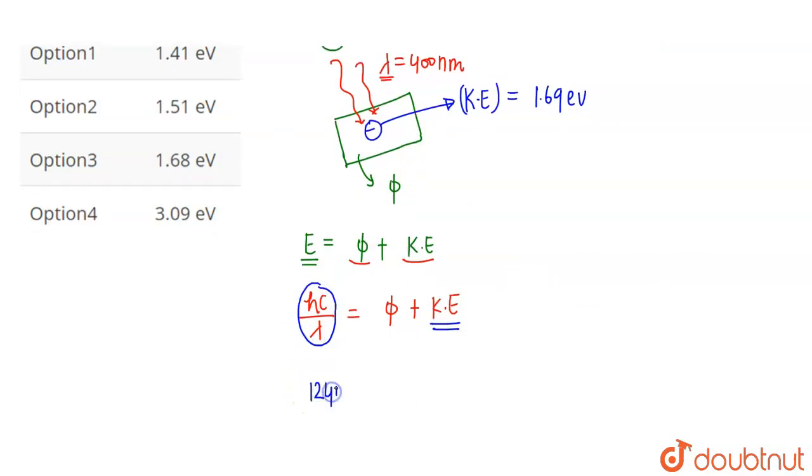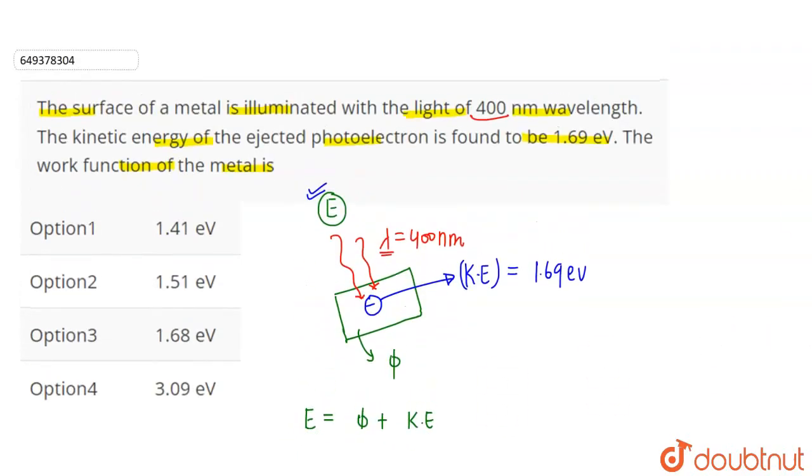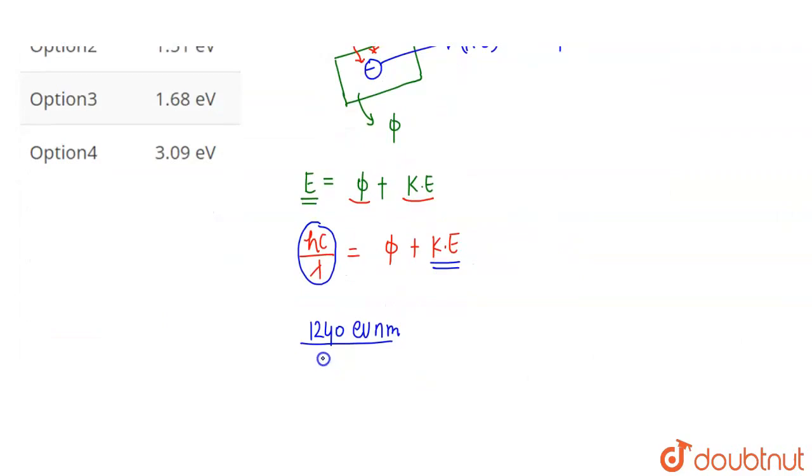The hc value is 1240 electron volt nanometer. The constant h is 6.62 times 10 to the power minus 34, and c is 3 times 10 to the power 8. When we substitute, we get 1240 electron volt nanometer divided by lambda.